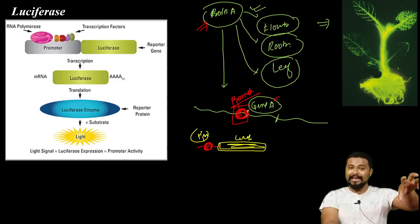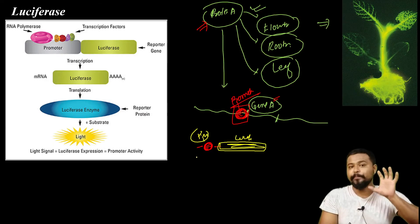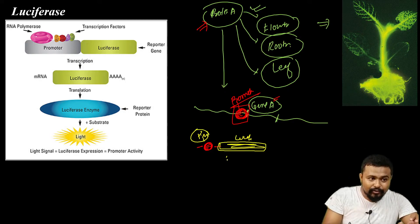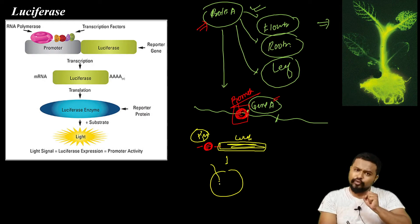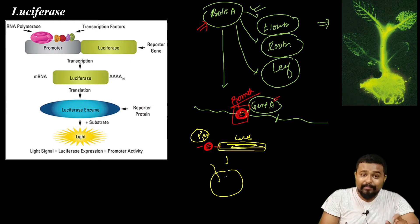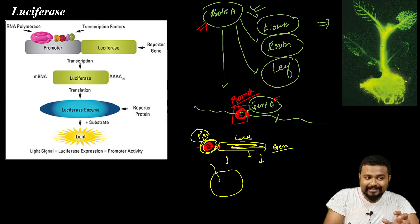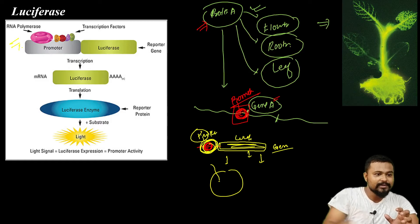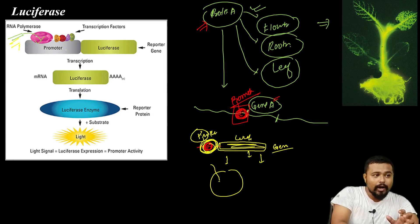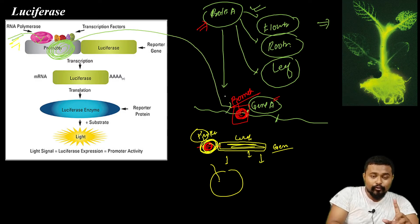We have a plant cell culture. This is the setup. RNA polymerase acts on the promoter. What is a promoter? This is a Gene A promoter. After the promoter, you have the transgene transplanted.